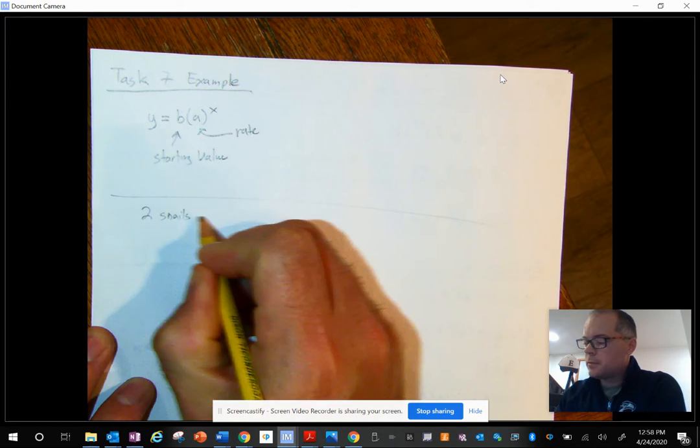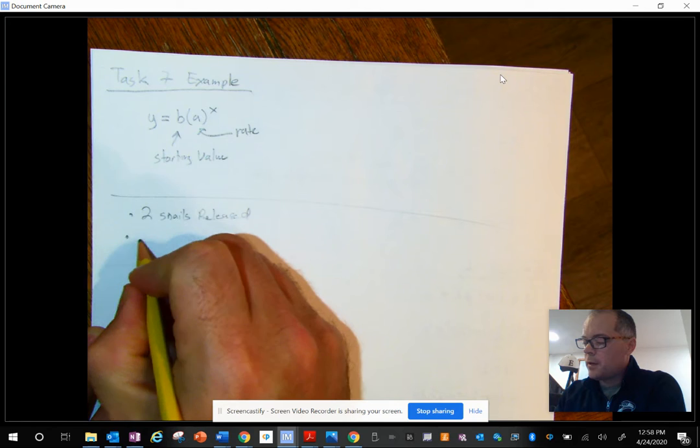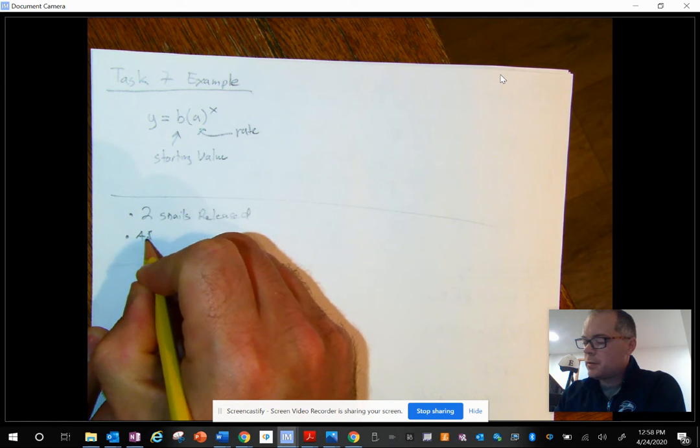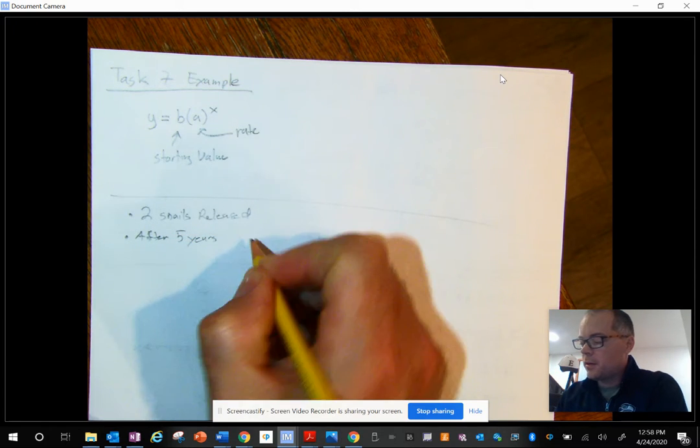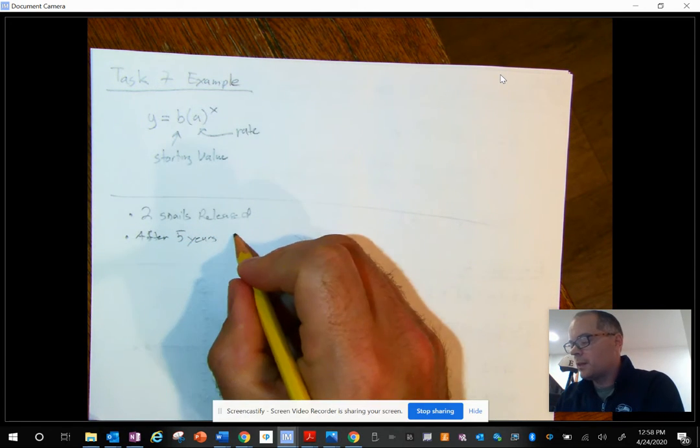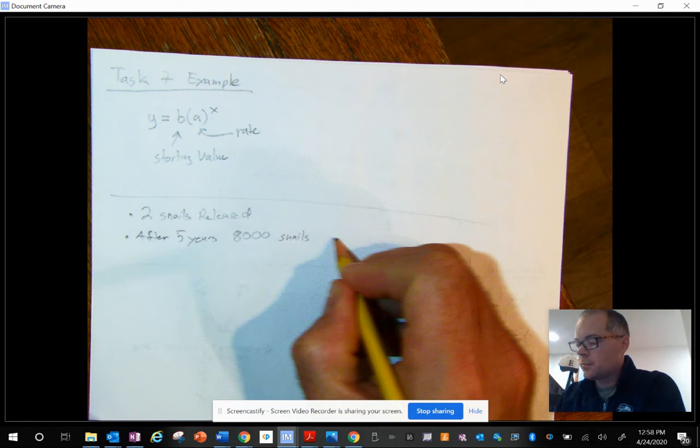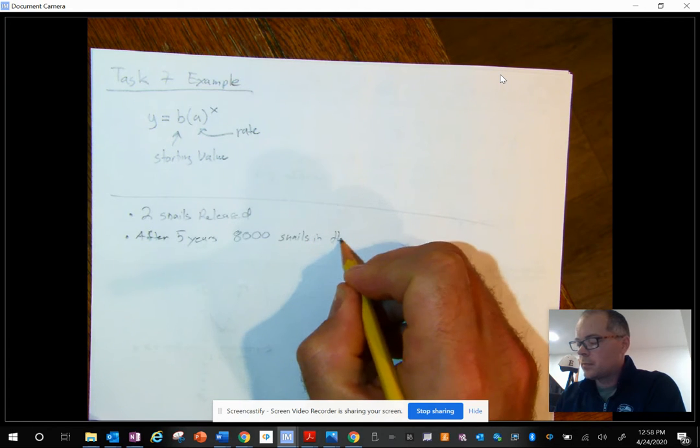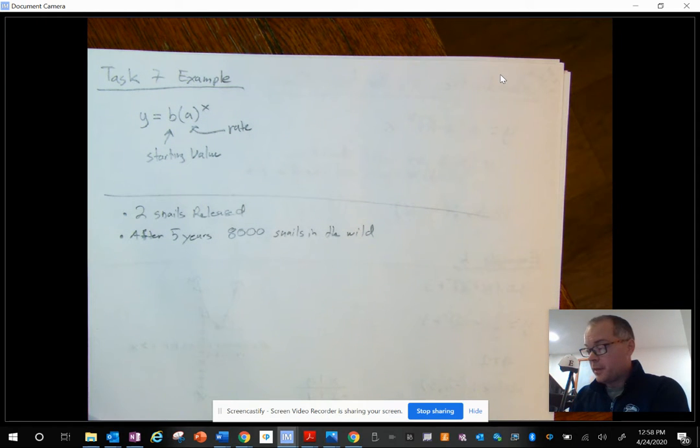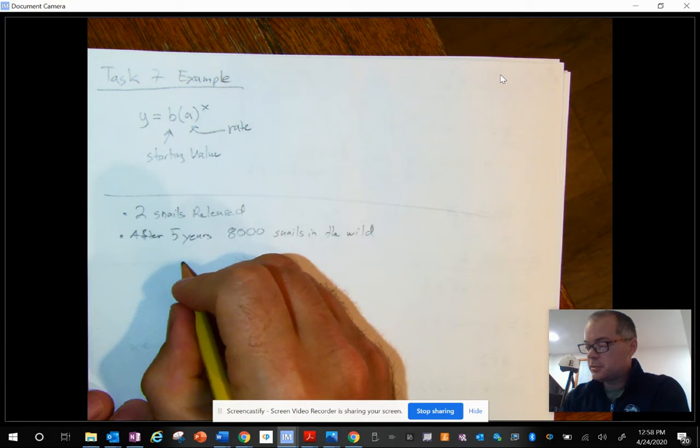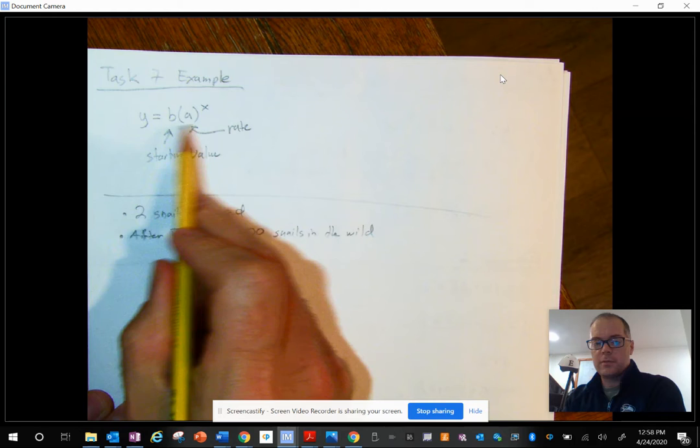So our example problem, two snails released, and I'm going to say after five years, there are 8,000 snails in the wild. So clearly I have two points, right? And if I made a T-chart of values, my X's and Y's, just like I would do up here for my equation.